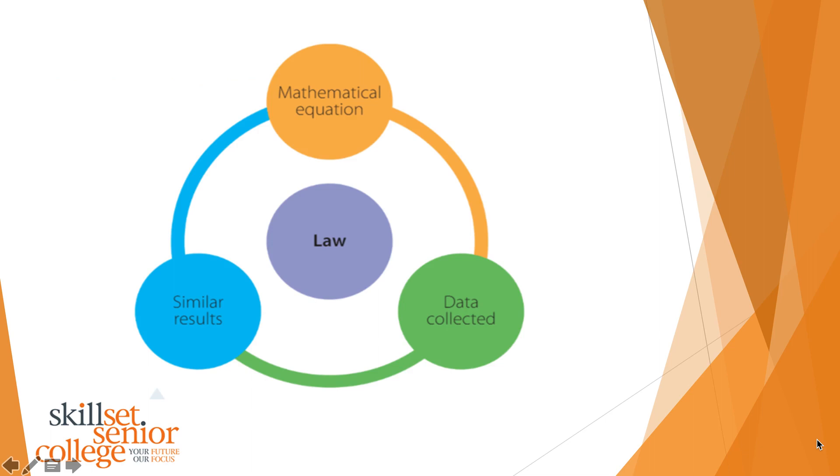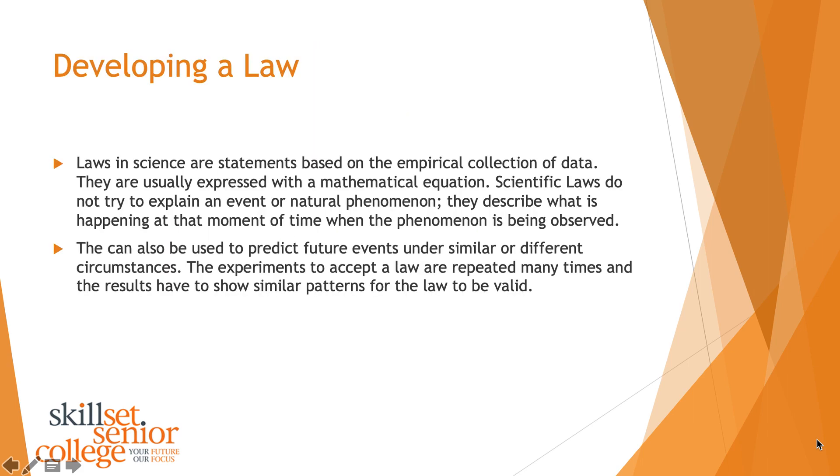Slightly simpler version. You make a mathematical equation, you collect data, and you check to find if that result repeats itself over and over. That's the process of a scientific law. Laws in science are statements based on empirical collection of data. Empirical data collection is when we do experiments. They are usually expressed with a mathematical equation. Scientific laws do not try to explain an event or natural phenomenon. They describe what is happening at that moment of time when the phenomenon is being observed. They can also be used to predict future events. The experiments to accept the law are repeated many times and the results have to show similar patterns for the law to be valid. This will become much clearer as we go through some examples.